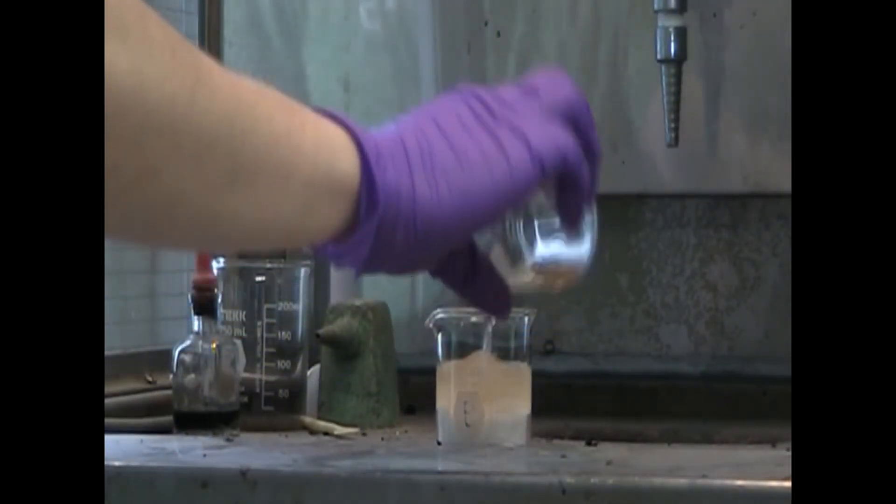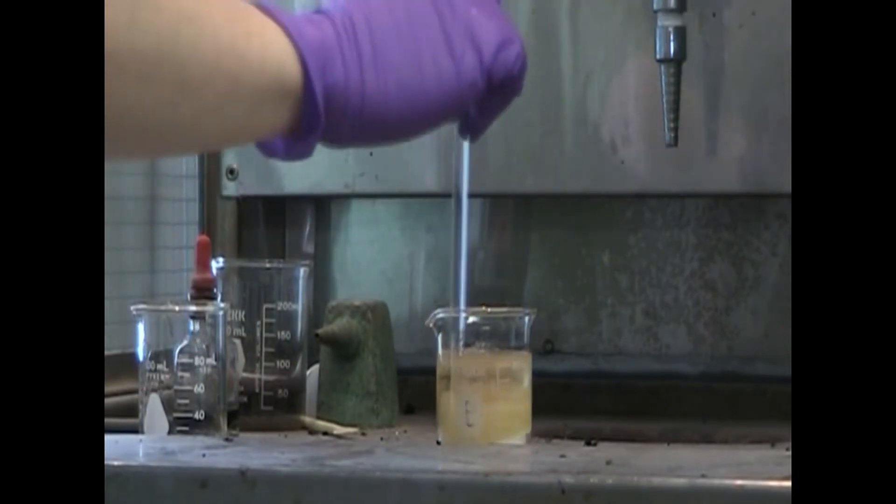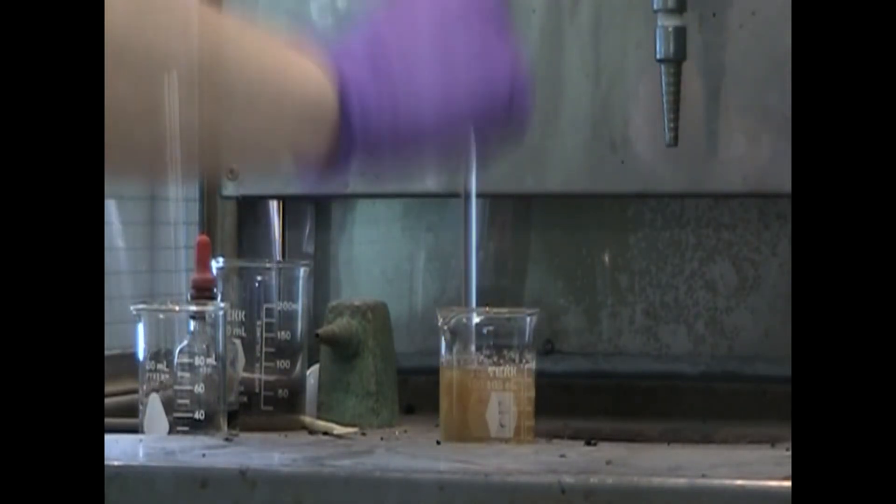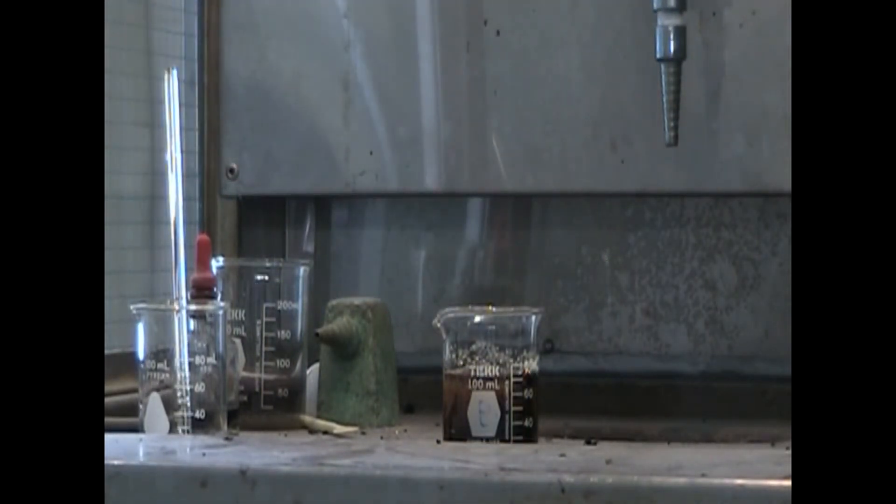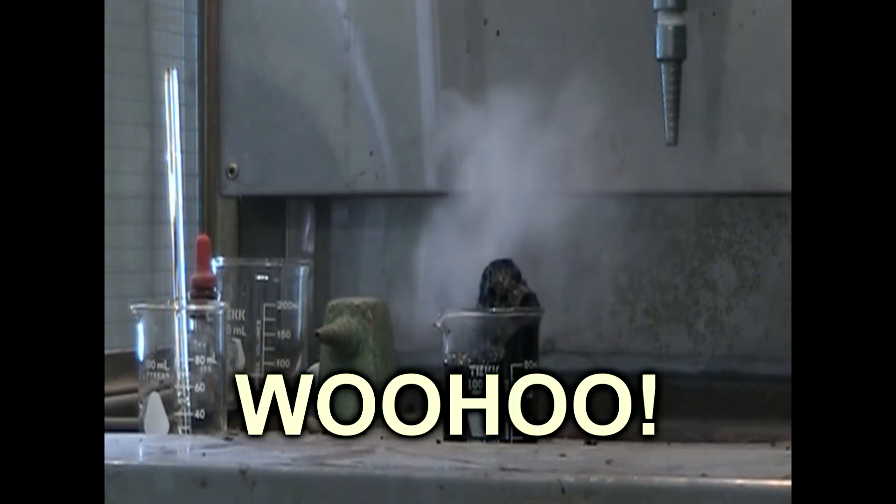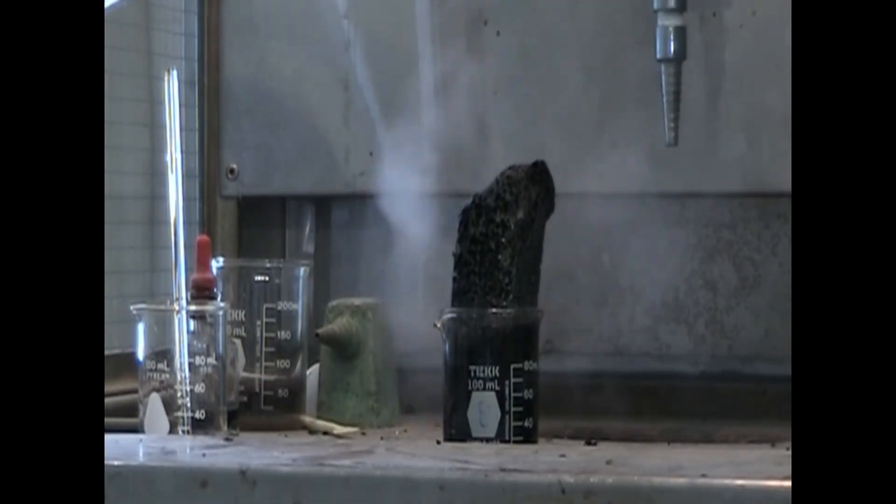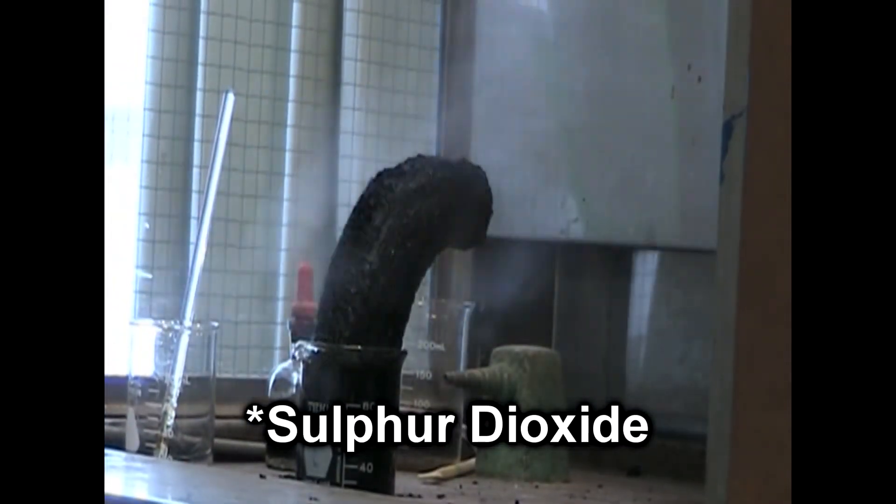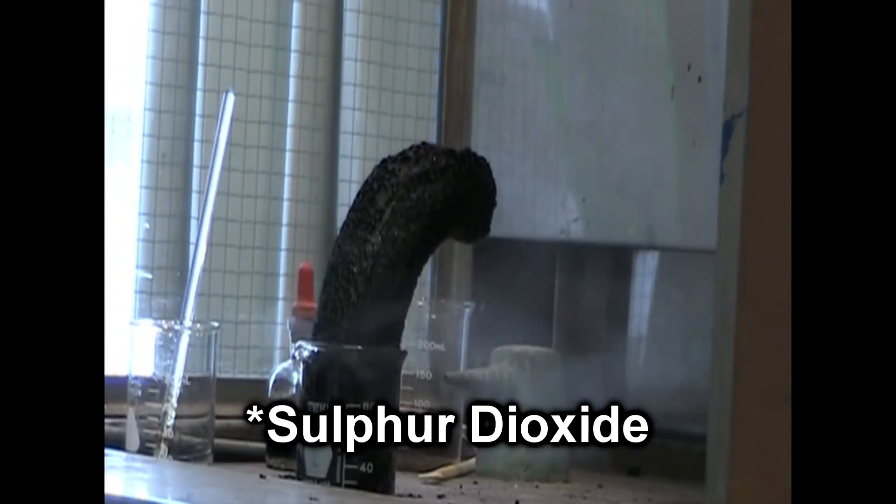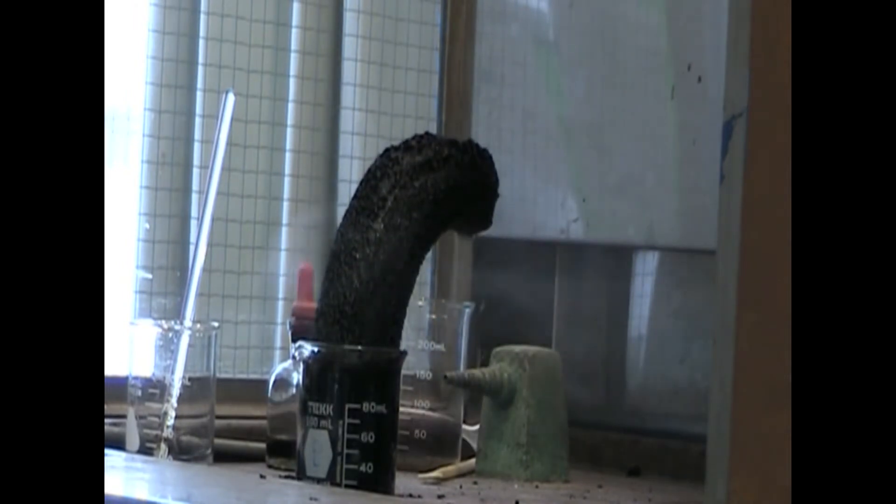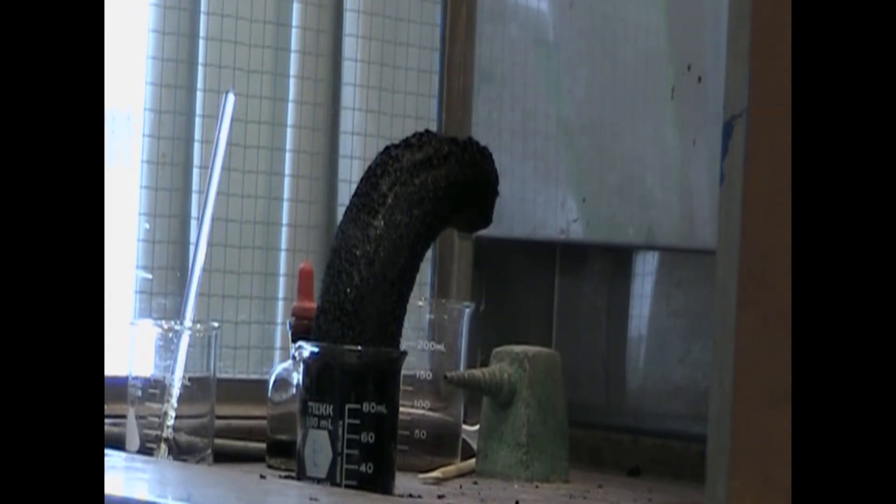Acids can also be used to dehydrate other compounds. We use the same 18.0 molar sulfuric acid to dehydrate sugar. The acid removes water from the sugar molecules. The resulting products are steam, sulfur dioxide, and carbon. The steam and sulfur dioxide giving off pushes the carbon upwards, creating a column-shaped mass. This reaction is also highly exothermic, a reaction giving off an abundance of heat and energy.